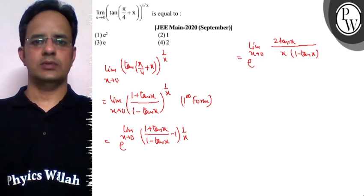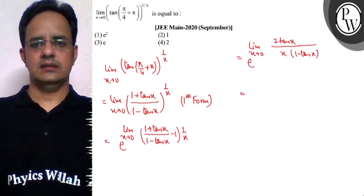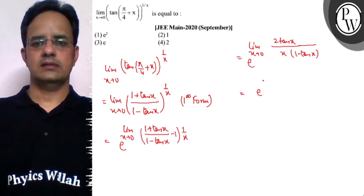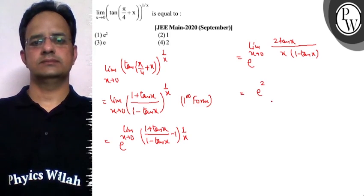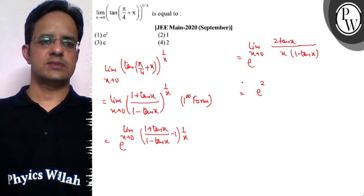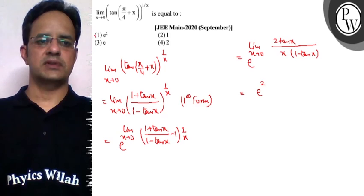Now as x tending to 0, tan x upon x limit is 1, so we get e raised to power 2. So the final answer to this problem is e square, option 1.